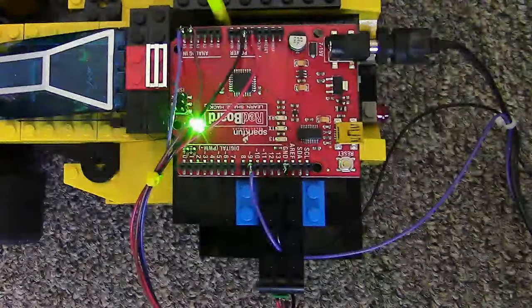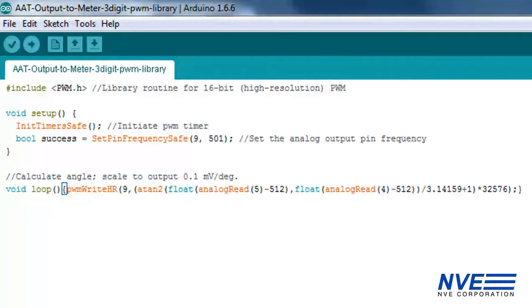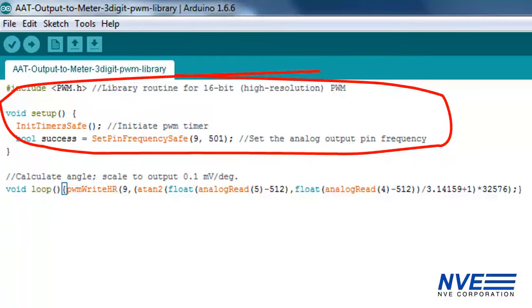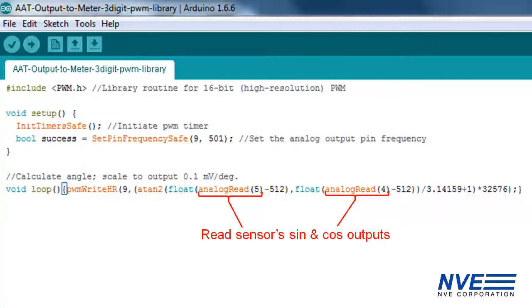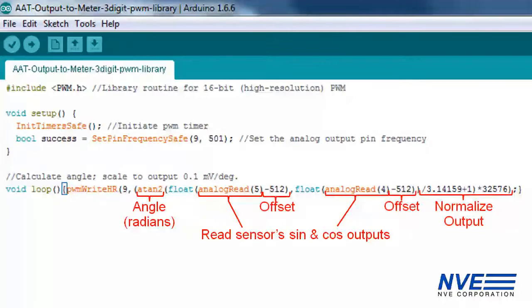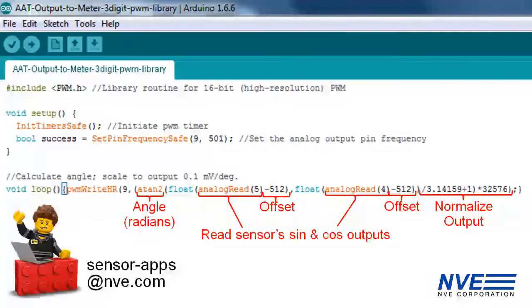The Arduino board is mounted on top above the engine. The Arduino program is only a few lines. We initialize PWM for the analog output, read the sensor outputs, calculate the angle using arc tangent, and normalize the output for five volts full scale.